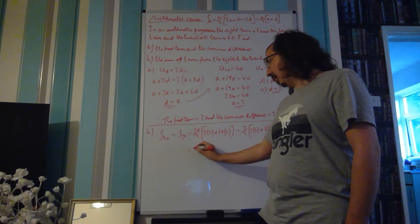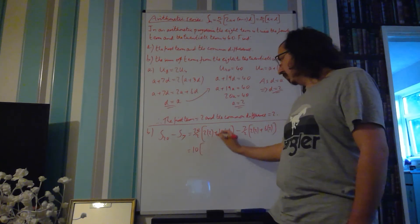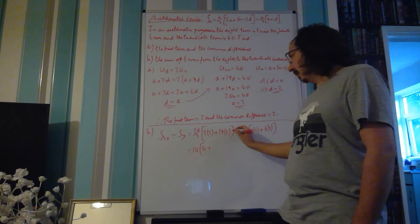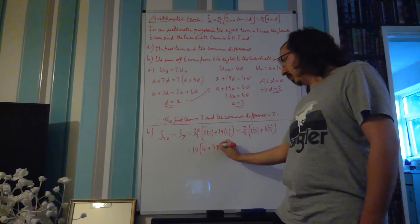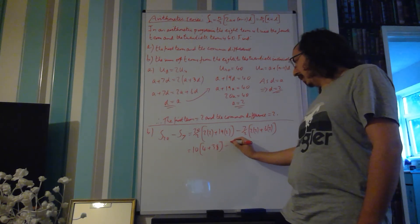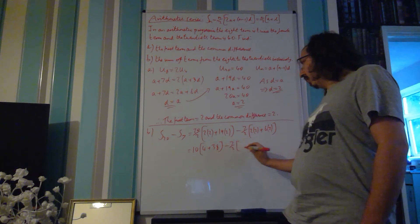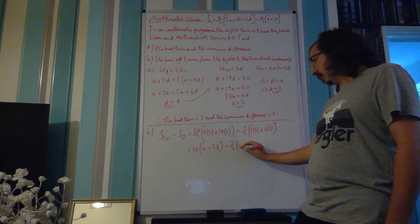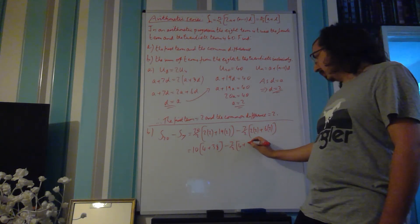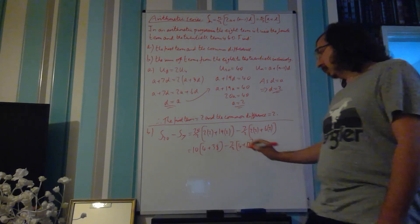20 over 2 is 10, 2 times 2 is 4, 19 times 2 is 38, minus 7 over 2. 2 times 2 is 4, plus 6 times 2, which is 12.